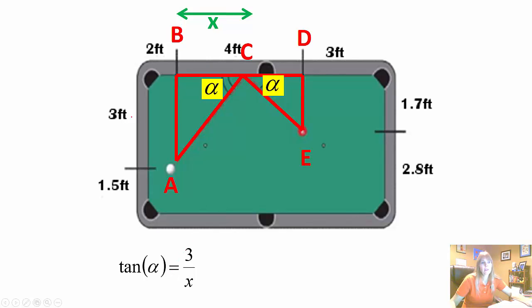And then from here I can call this distance x. And so I know if I'm looking at this angle, my tangent of alpha is equal to my opposite, which would be 3, because that's this right here, 3 feet over my adjacent x.